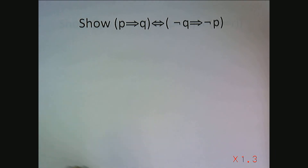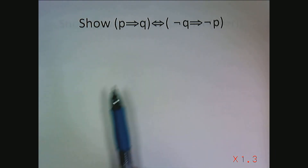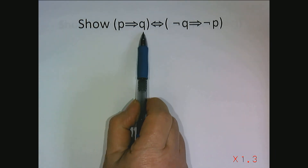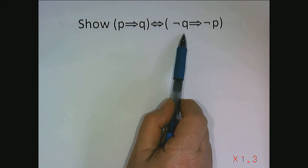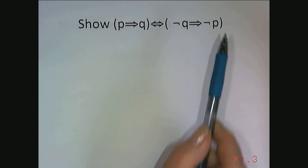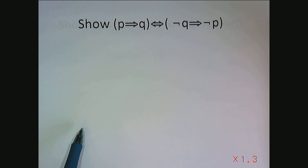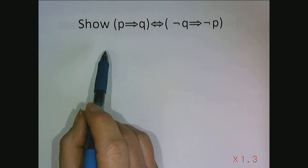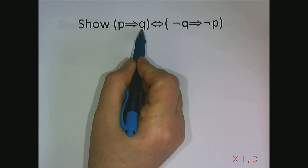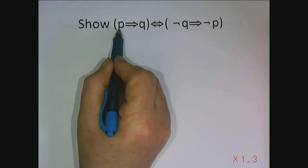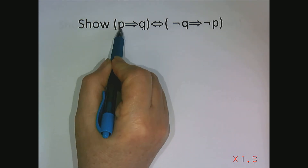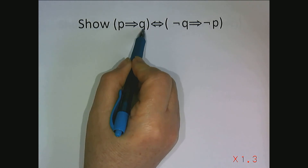Let's say we want to use a truth table to prove that p implies q is equivalent to not q implying not p. The first thing we want to do is create a table that looks at all possible combinations of the truth values of the components. There are two basic components here: p and q. P could be true or false, q could be true or false.